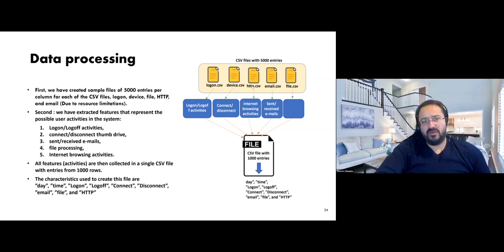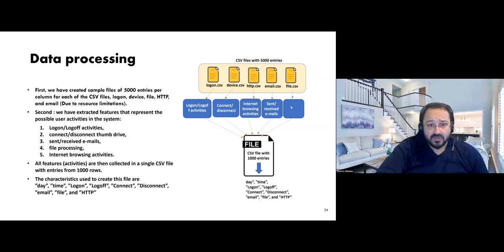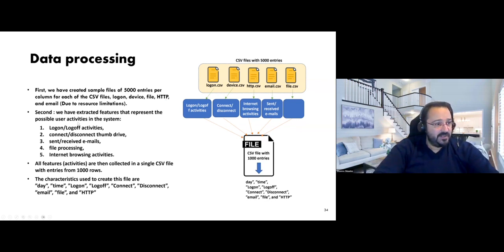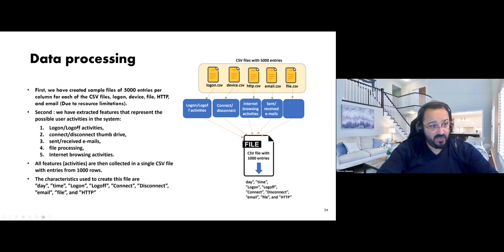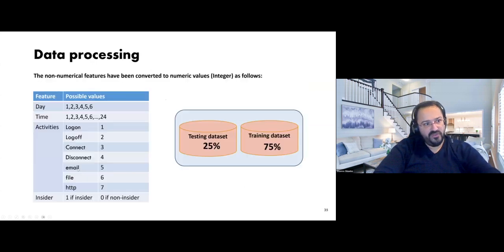The files we used were logon, device, HTTP, and emails. The file format is CSV. From all these files we got a CSV with 1,000 entries containing date, time, logon, logoff, connect, disconnect, and email. We extracted the features we wanted from all these files, combined them into one file, and fed that file to the machine learning algorithm. We split the dataset into training and testing — you can run 80-20, 90-10, or 50-50. Neural networks need a huge amount of data for training, and this training is resource-hungry.